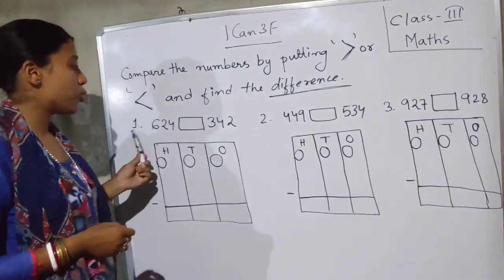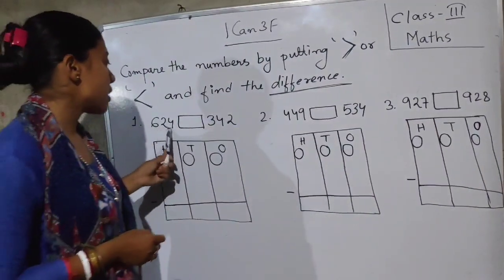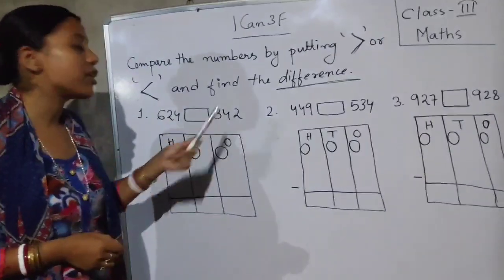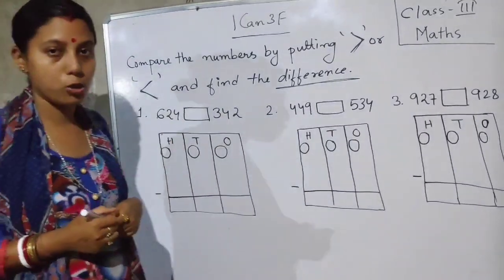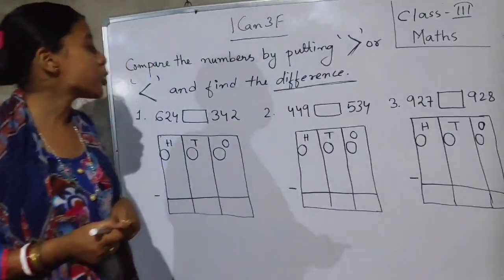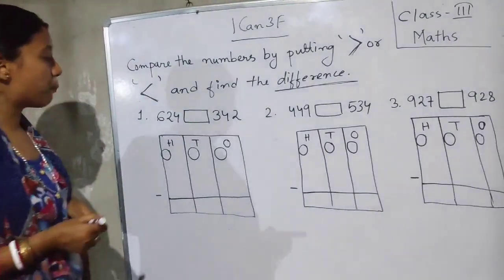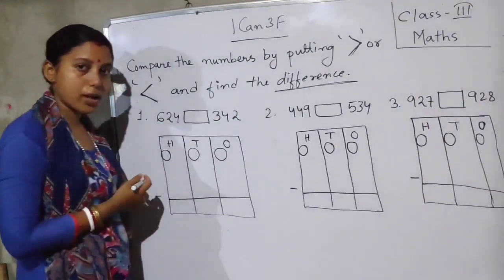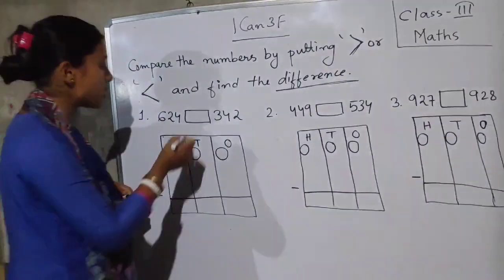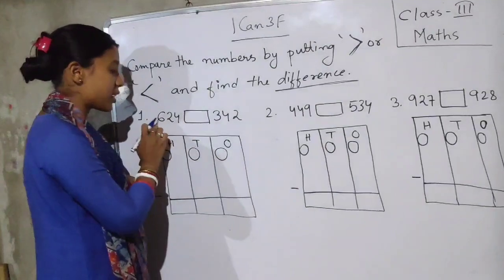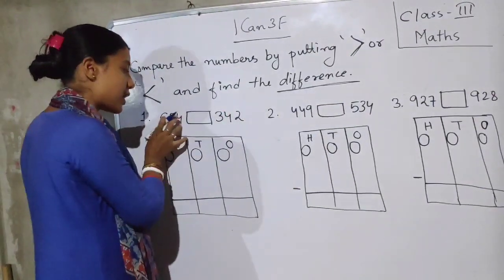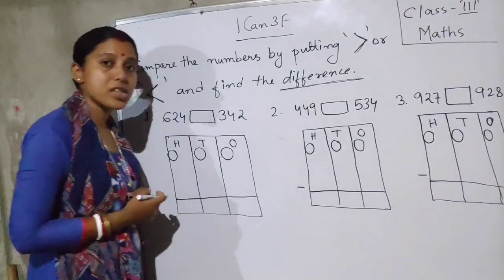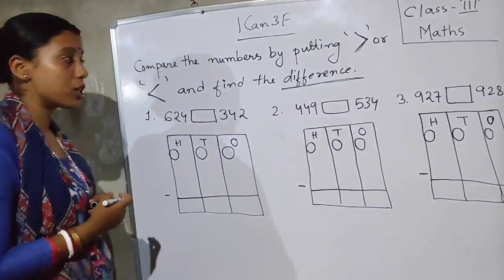First, in question number 1, you see: 624 compared with 342. Which one is the greater number — 624 or 342? 624 is the greater number and 342 is the smaller number.